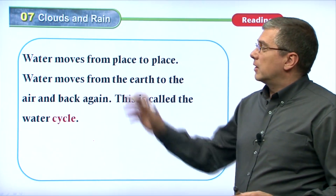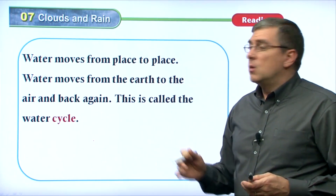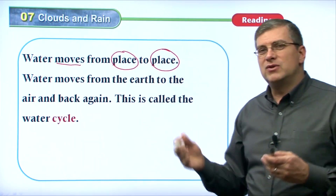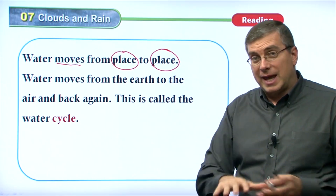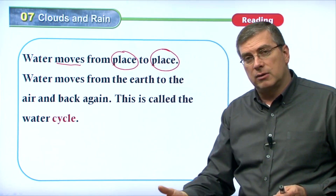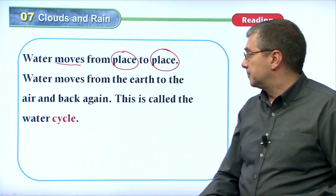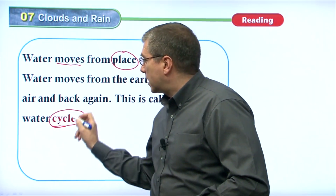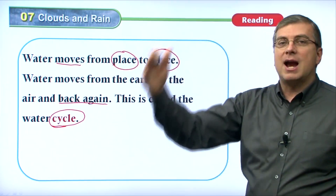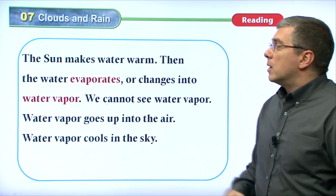Let's go over the reading section. Our topic sentence is: water moves from place to place. Water is in a lake or ocean to begin with, then it moves up into the air, becomes clouds, and then moves back down to the ground. Water moves from the earth to the air and back again — this is called the water cycle, because it repeats. It goes from the ground to the air, back down to the ground, then to the air again. It's a cycle — it moves around and around, repeating many times.